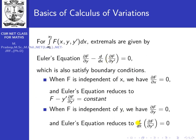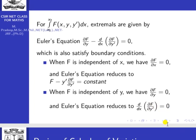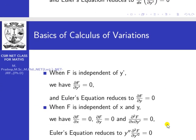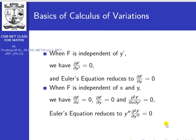The third case: when F is independent of y' — meaning F is a function of x and y only — then ∂f/∂y' = 0, and the Euler equation reduces to ∂f/∂y = 0.